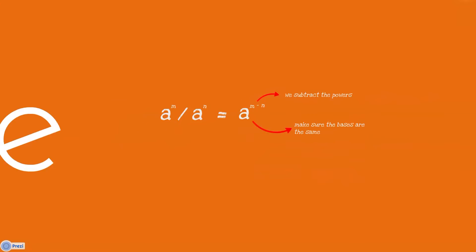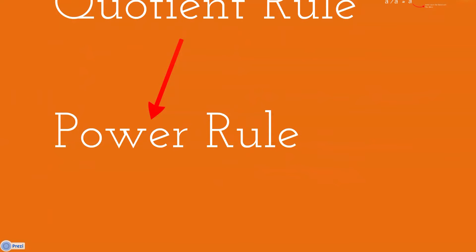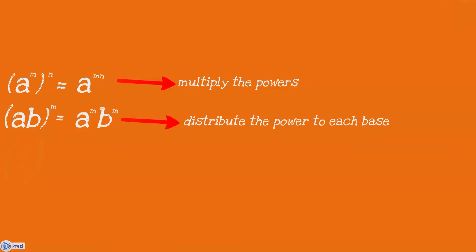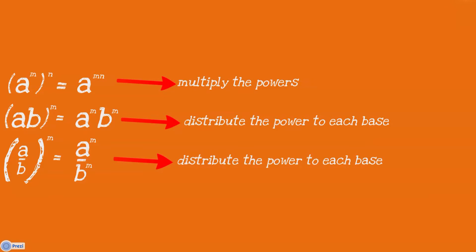Then, the power rule. The power rule has three sub-rules. First, in a bracket, a to the power m to the power n will equal a to the power m times n — we multiply the powers. Next, a to the power m equals a to the power m times b to the power m — we distribute the power. Finally, in a bracket, a all over b to the power m will equal a to the power m over b to the power m — again, we distribute the power to each base.